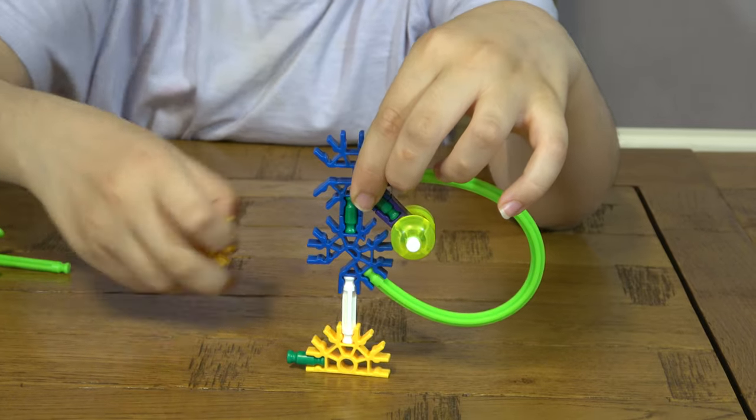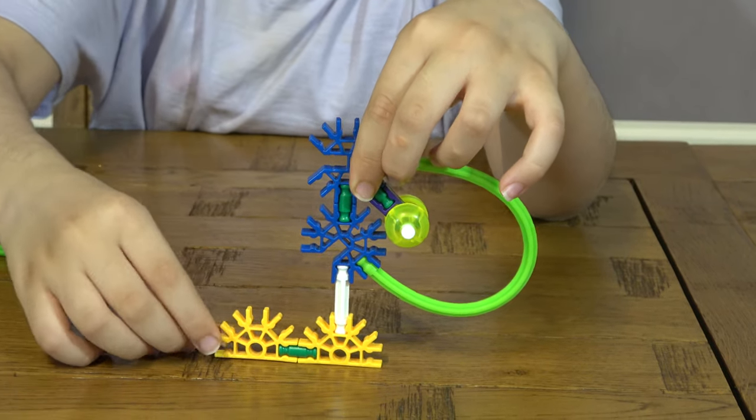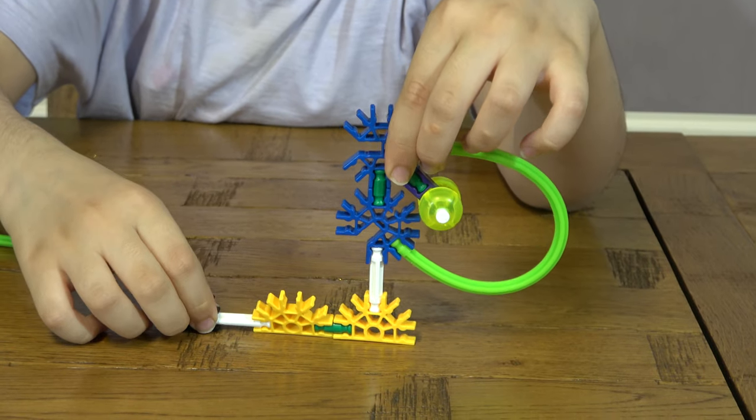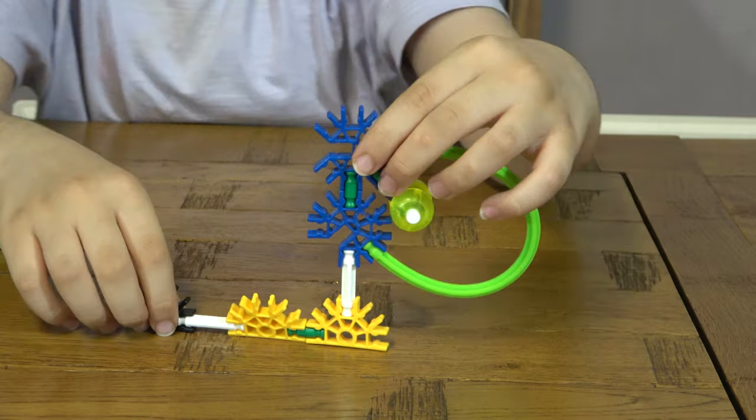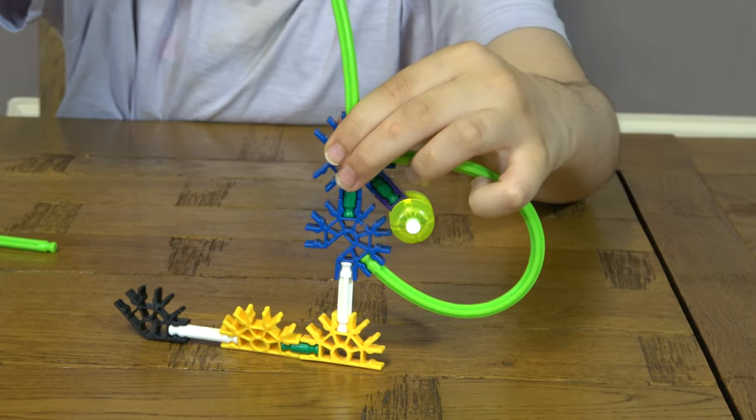and then the next thing you need to do is place this here, this here like so, and then the next thing you need to do is build the bunny's ears.